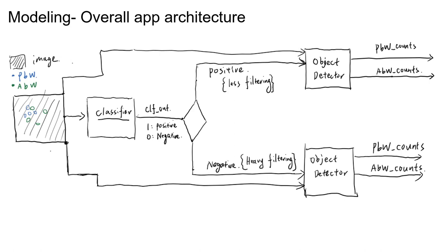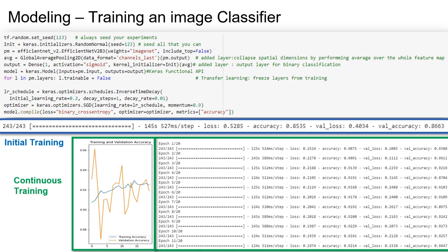Now let's briefly go over the architecture of our model for counting worms. Raw images are first passed to a classifier, where they are resized to 512 by 512 pixels. The classifier outputs a label indicating whether the image contains worms or not. If the image label is positive it is filtered less, and if negative it is filtered more. Both positive and negative images are then passed through the object detector to detect and count Pink Ball Worms and American Ball Worms, and the counts with image IDs are saved to a CSV file.